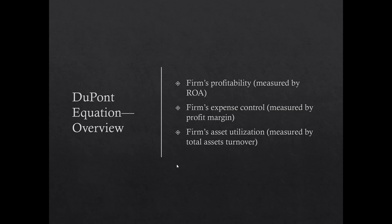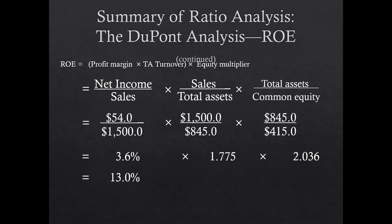The DuPont equation examines the firm's profitability through return on assets, expense control through profit margin, and asset utilization through total asset turnover. You can compare each component to industry benchmarks to determine where problems exist — whether in expense control, asset management, or financial leverage — and determine where improvement efforts should be focused.